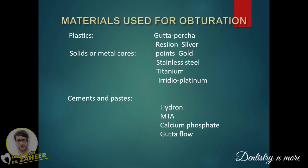Today we are going to learn only about gutta percha, but other materials used for obturation include acylion, silver points, gold, stainless steel, titanium, iridio-platinum, MTA, calcium phosphate, gutta flow, and Hydron.